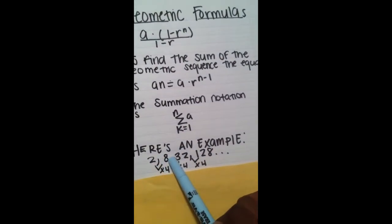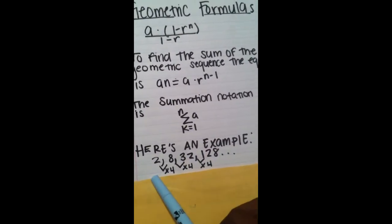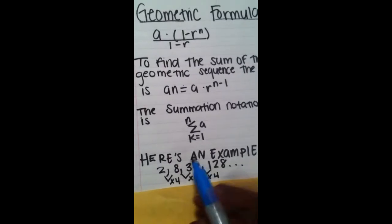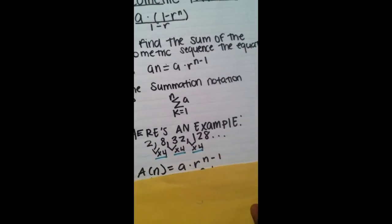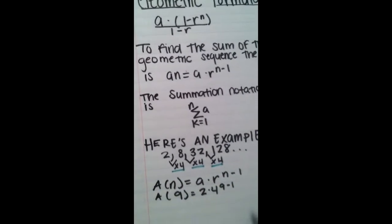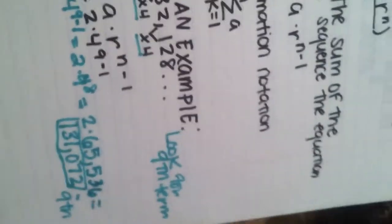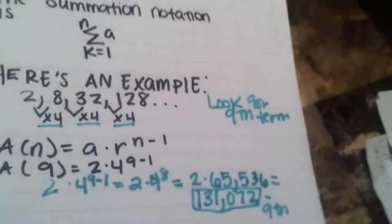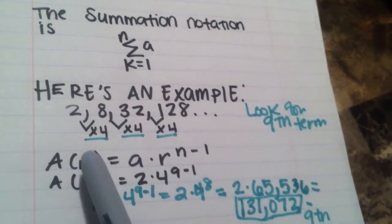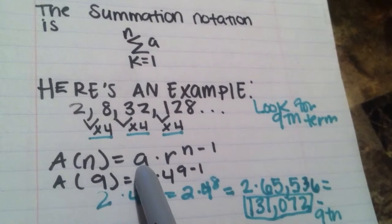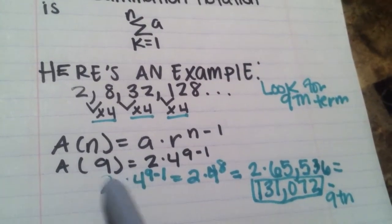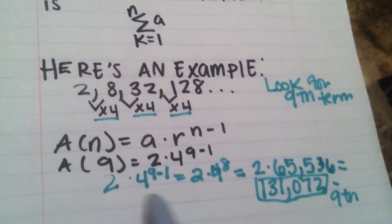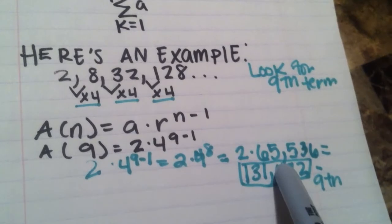2, 8, 32, and 128. As you can see, the common ratio is 4 times 4 times 4. So you have to plug it into your equation. I'm looking for the ninth term. I already have my equation set up. The nth term we're looking for is 9. The a term, the first term is 2. The ratio is 4. The nth term is 9 minus 1. So you plug in all your values, and you do your calculations, and you have 2 times 65,536.